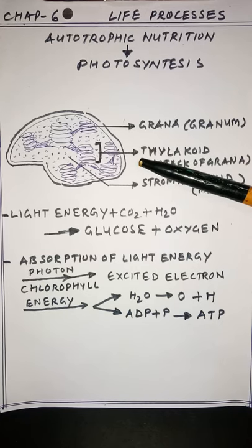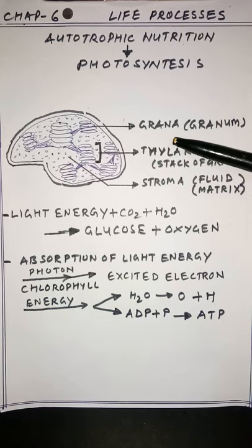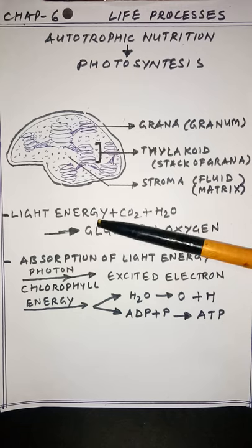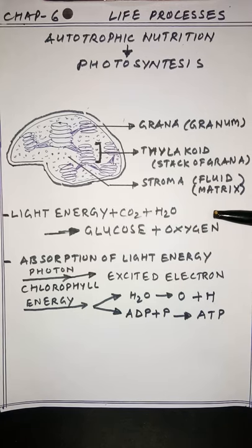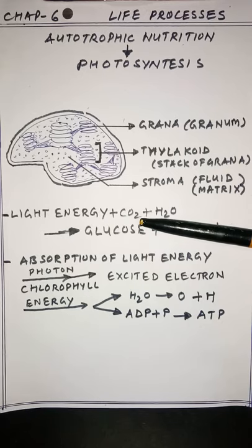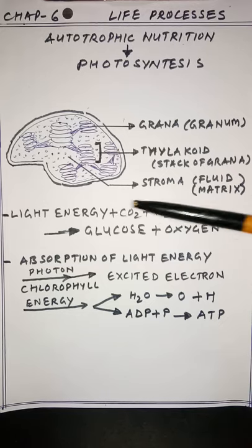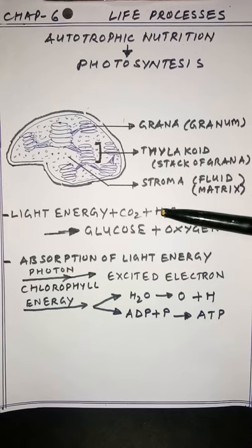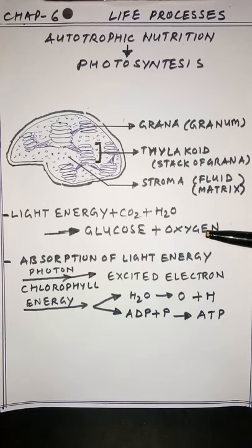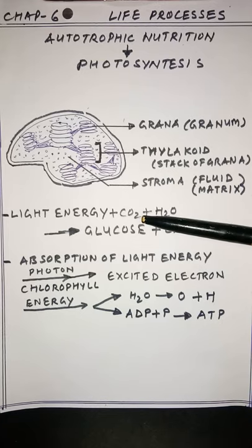Photosynthesis occurs in all green parts of the plant, not only the leaves. The process requires: light energy from the sun, carbon dioxide from the environment, and water from the soil. These combine in a reaction that produces glucose and releases oxygen. Oxygen is released as a byproduct, while carbon dioxide is taken in as a reactant.